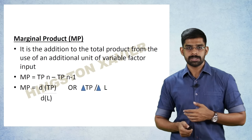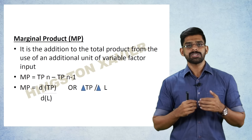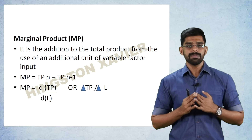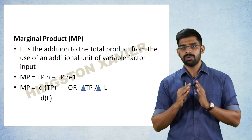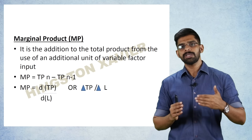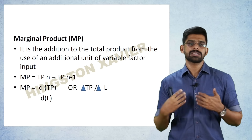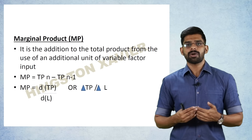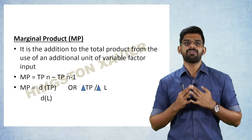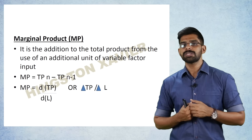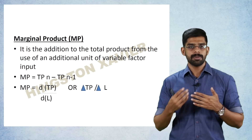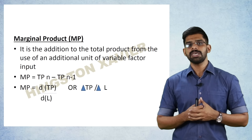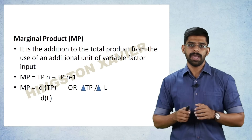Then, Marginal Product (MP) is the addition to Total Product from the use of an additional unit of a variable factor input. For example, if using 100 workers produces a certain quantity, and using 101 workers produces more — the additional output achieved is the Marginal Product. The formula is: MP = TP of N minus TP of N minus 1. Alternatively, Marginal Product equals the first order derivative of Total Product with respect to L.